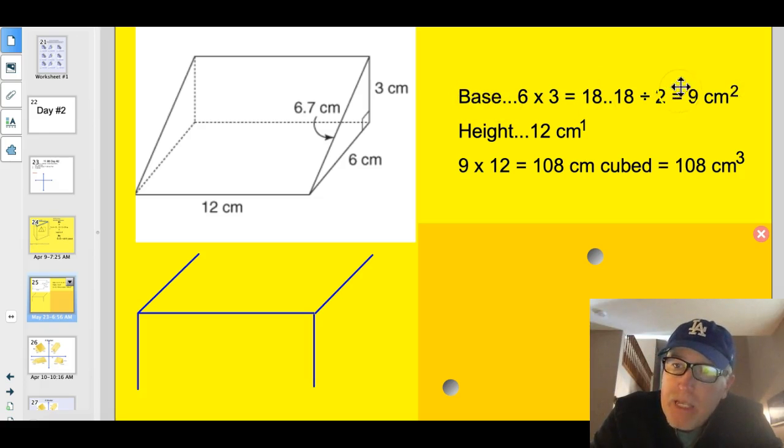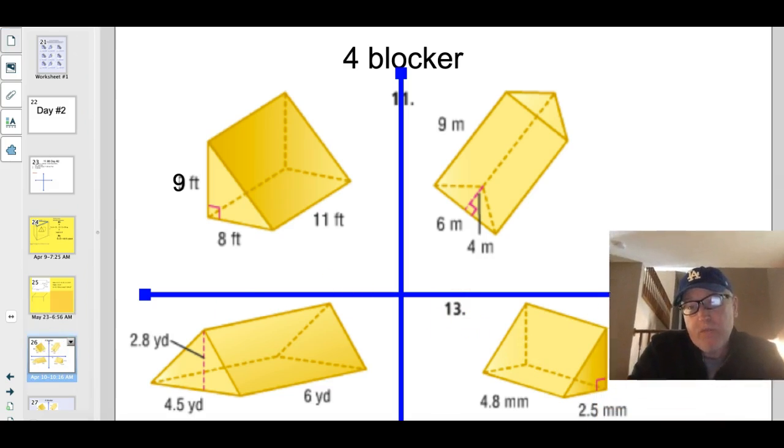When you find that big base, that's going to be in units squared. The height is going to be linear units or just centimeters. But you can think about that as an exponent of 1. So you can see where you get the exponent of 3 when you cube them. It's like the third dimension. Very well, my friend.